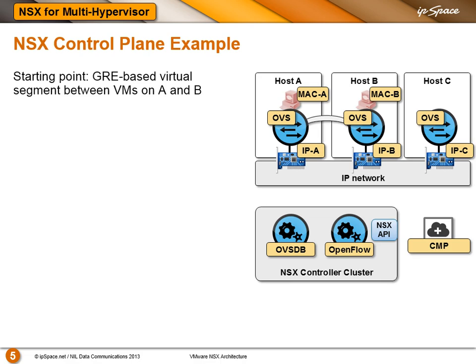I already got the questions of how do we install these forwarding entries into the OpenVSwitch. We'll walk through that step by step. We'll start with NSX for multiple hypervisors, which uses OpenFlow.